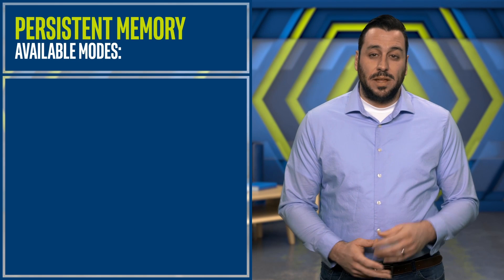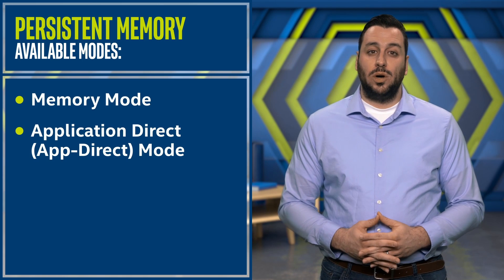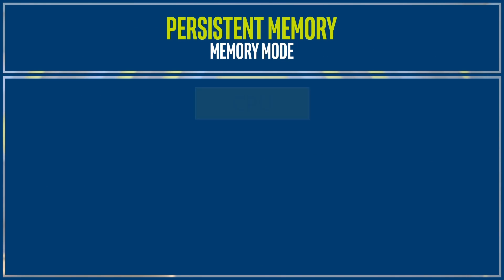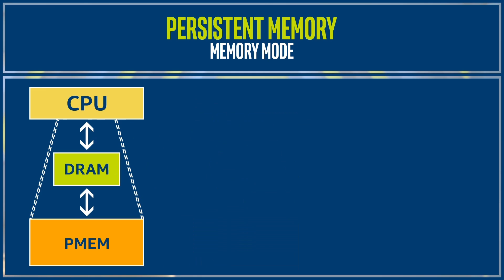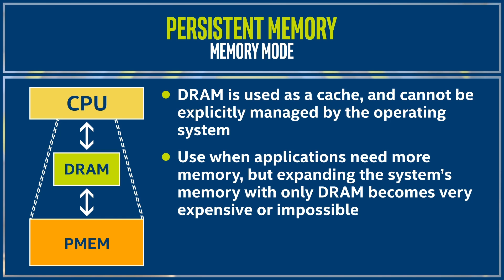Persistent memory can be used in three modes: memory mode, application direct (AppDirect) mode, and mixed mode, which is a combination of the two. Memory mode allows the system to use persistent memory as main memory. In this case, DRAM is used as a cache and cannot be explicitly managed by the operating system. This mode is appealing for cases where applications need more memory, but expanding the system's memory with only DRAM becomes either very expensive or impossible due to scaling problems.